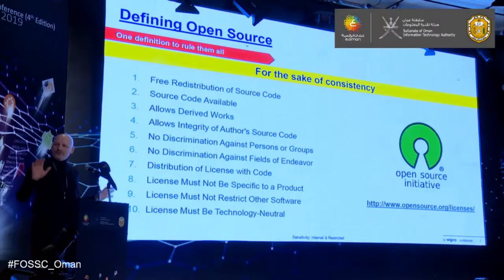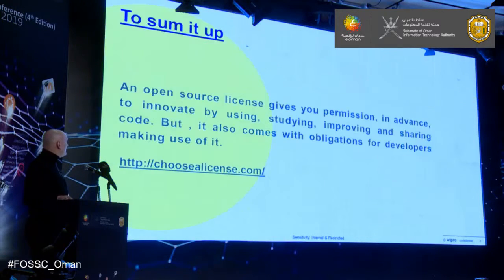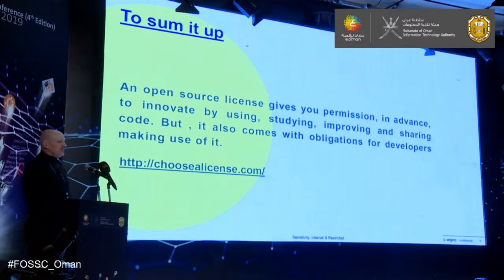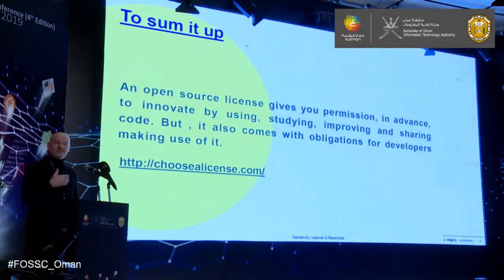Now that we have this idea of what open source and free software is — and these two definitions are really very, very similar — let's look at how this brings us to the industrial revolutions. An open source license gives you permission in advance — you don't have to sign a license — the permission to innovate by using, studying, improving, and sharing code. But it also comes with obligations. If you modify source code of GPL software, you have the obligation to contribute those modifications back if you distribute the source code. Those constraints come from the idea of making software more available to more people.